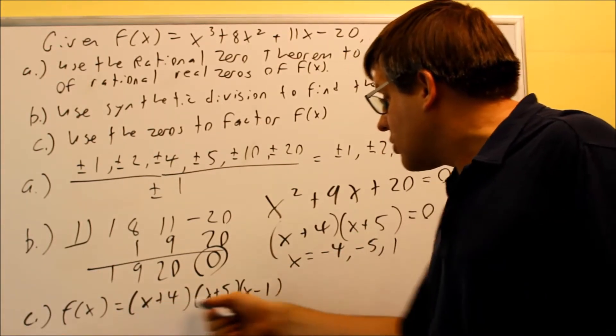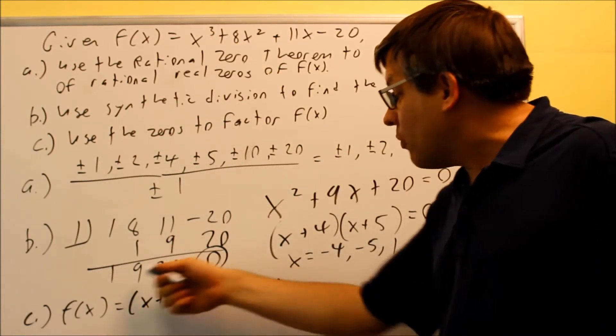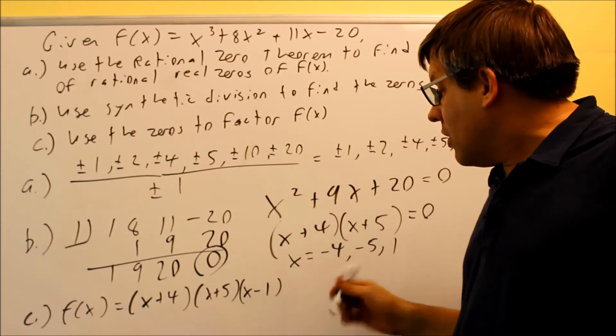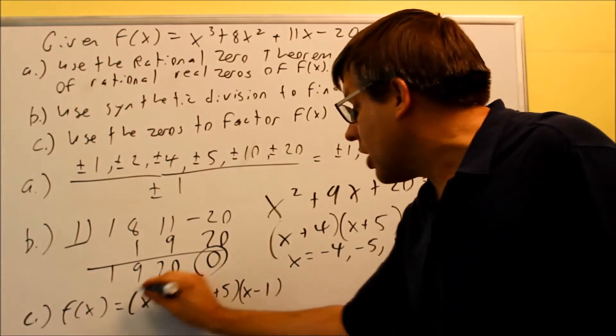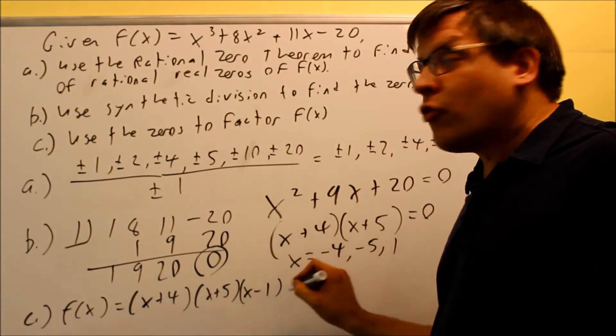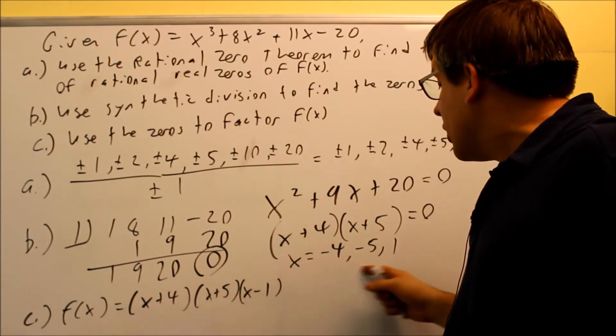And so this now we have three terms. If you multiply that together you will get the x cubed and that would be correctly factored. So your answers would be three of them: negative four, negative five, and one. They actually come from this. So this would be the fully factored form of the original one. And setting that equal to zero you would get these.